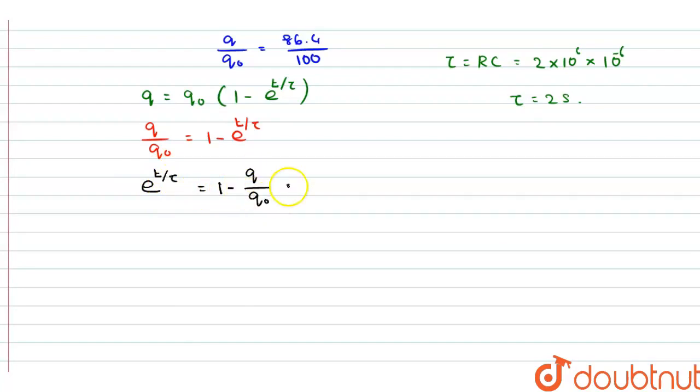We know the value of q by q0, that is 1 minus 86.4 divided by 100. So, this is equal to 100 minus 86.4 divided by 100 is equal to 13.53 by 100.